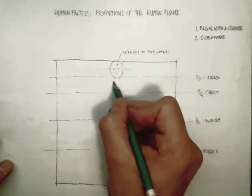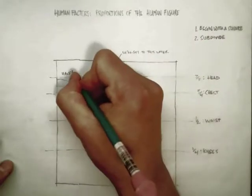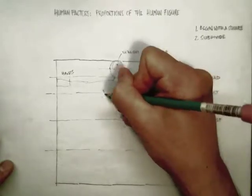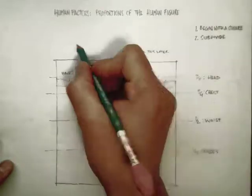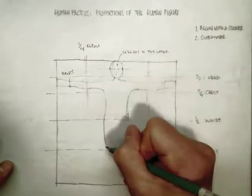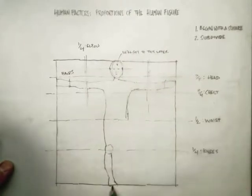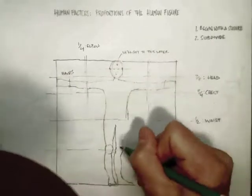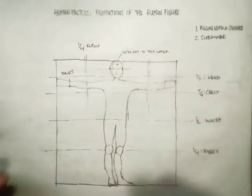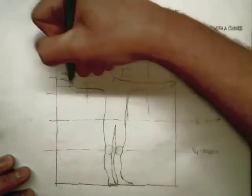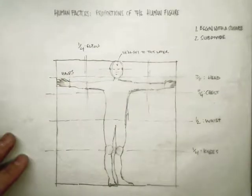Remember that your human figures are always going to be in a posture, so you're going to have to take this underlying geometry and adapt it to suit the deformation that the particular scene that you're drawing calls for. You can draw joints at each of these proportional locations, and those joints will guide the repositioning of the limbs.